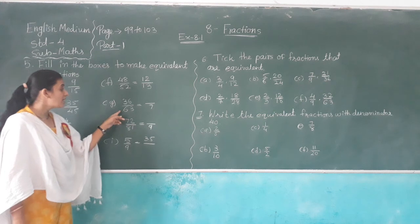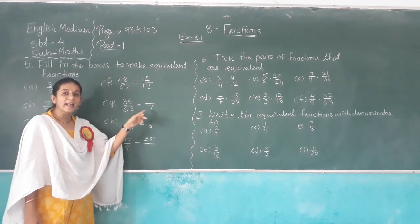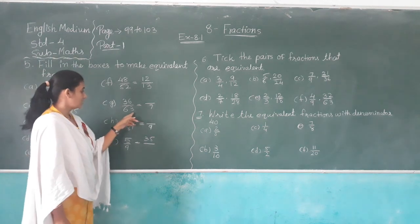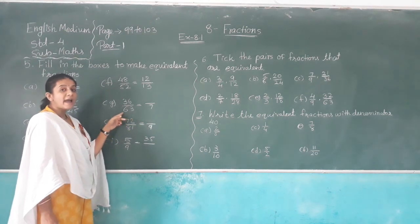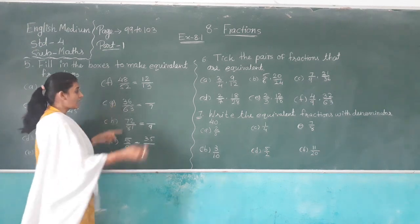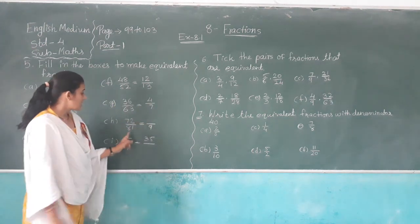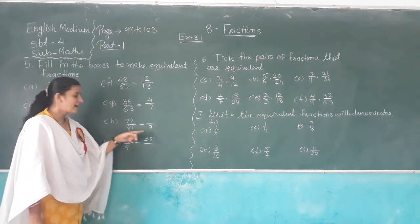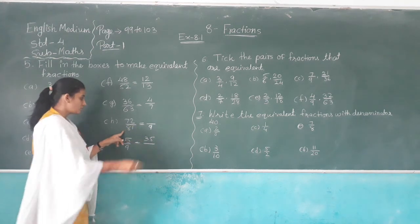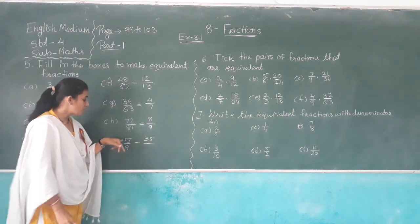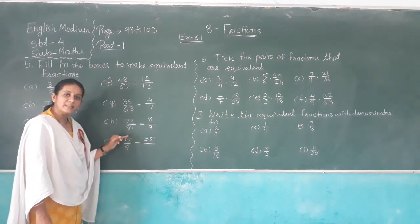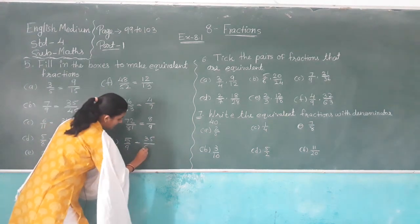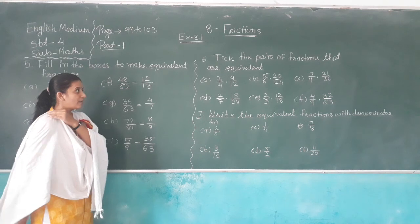Sixty-three divided gives seven, so nine sevens are sixty-three. Dividing by nine: nine nines are eighty-one, nine eights are seventy-two. Five multiplied by seven is thirty-five, nine sevens are sixty-three. This is called equivalent fraction.